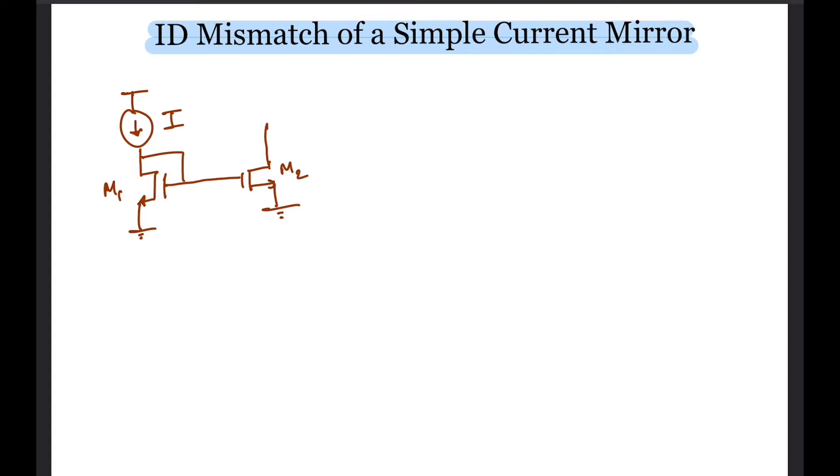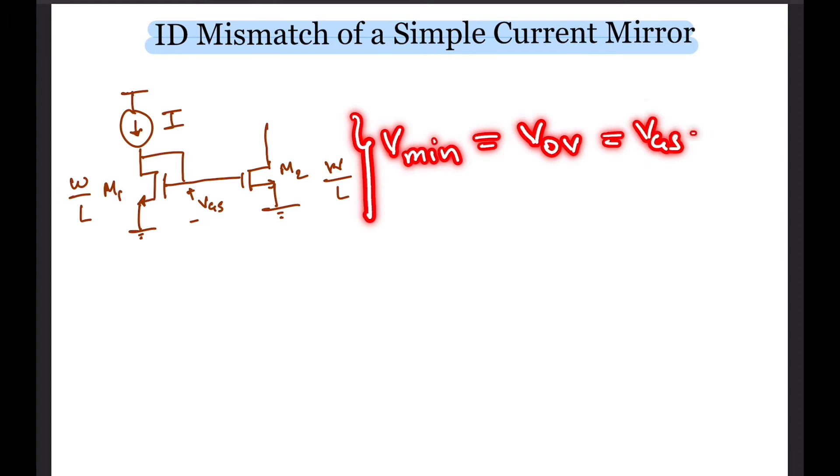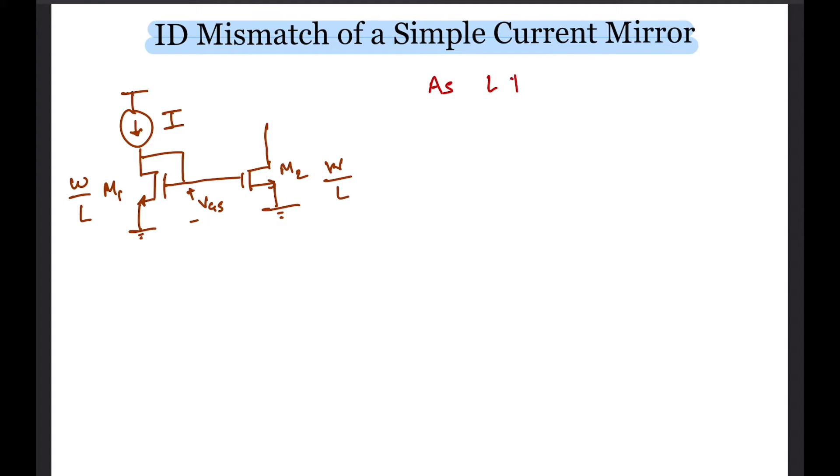Now although the size of the current mirror transistors depends on various things such as how much GDS can we tolerate, the matching, the parasitic capacitance added by the current mirror, I thought I would think about all those later. For now let me just choose a large enough length and aspect ratio so as to have sufficiently low GDS and overdrive voltage, which is VGS minus VT.